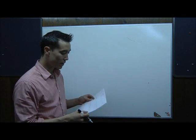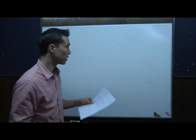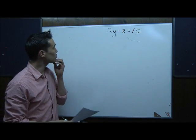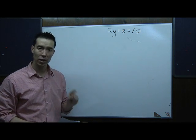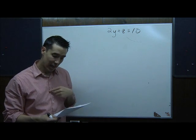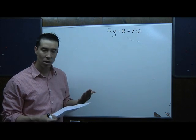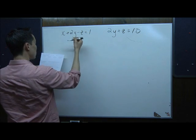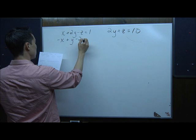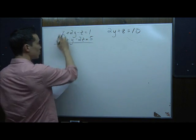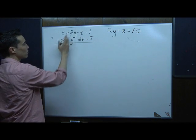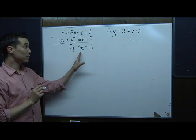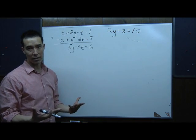On number 3, I notice the third equation is 2y plus z equals 10 — it doesn't have an x at all. So I can save time by pairing the other two equations to eliminate x, since the third equation already has x gone. The first equation x plus 2y minus z equals 1 and the second equation negative x plus y minus 2z equals 5 are perfectly set up to eliminate x. Adding straight down: 3y minus 3z equals 6.